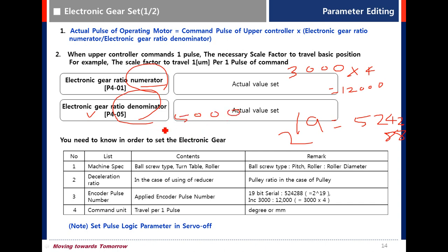When the input pulse from the upper controller is 5000 pulses, the motor makes one full rotation.